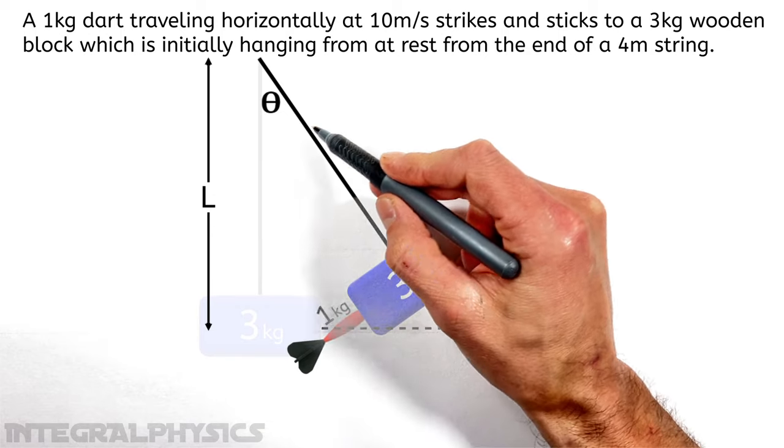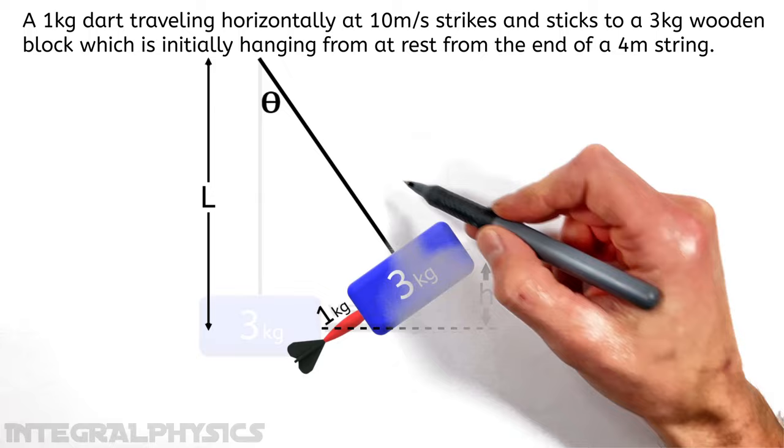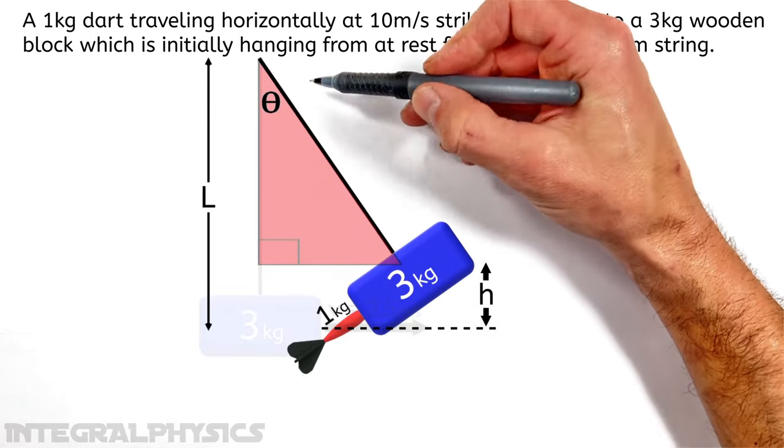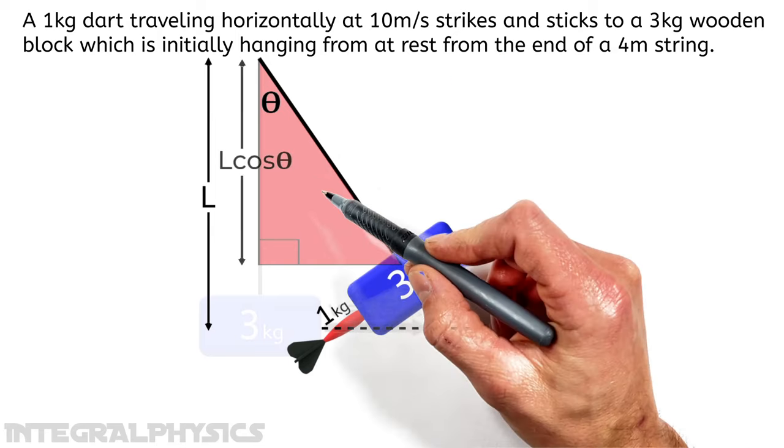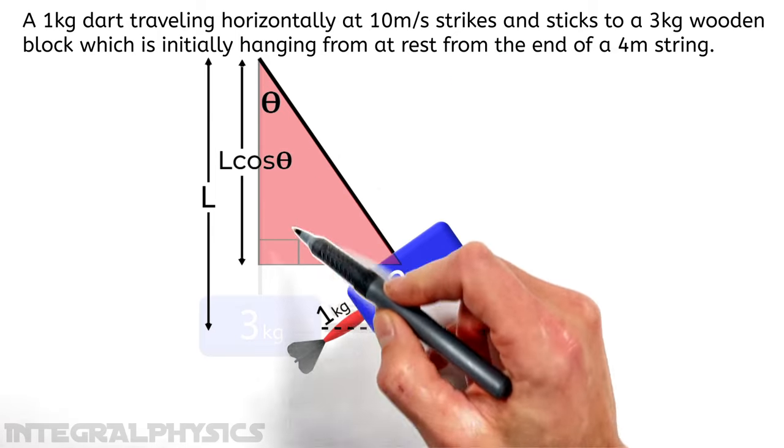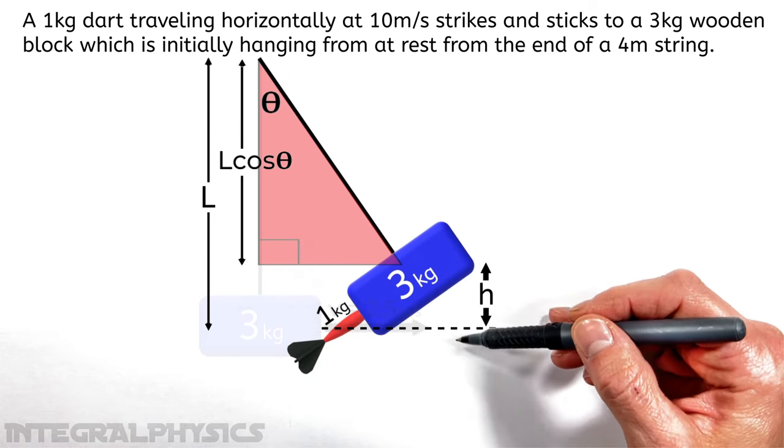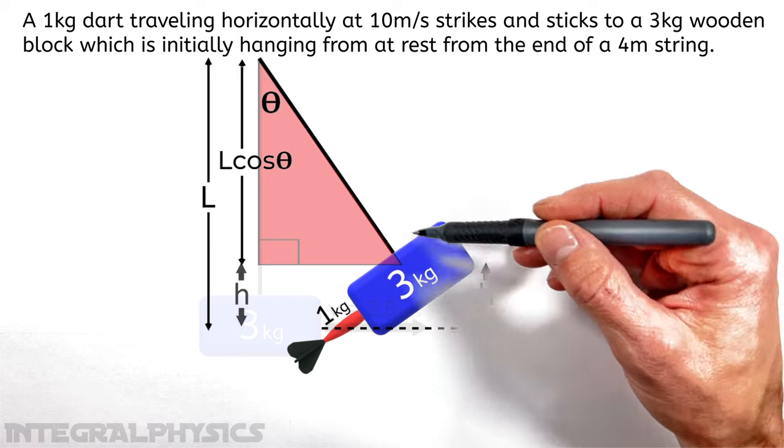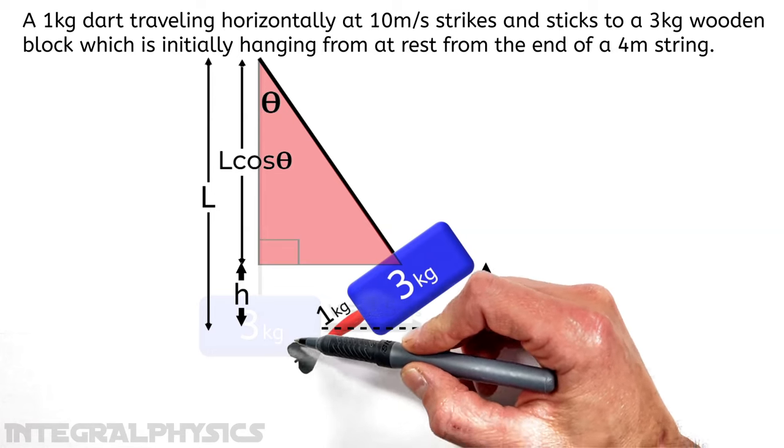But if you look at this with respect to this angle right here, and you view what's going on here as being a large right triangle, this dimension right here is actually L cosine theta, because it's the adjacent side of this right triangle. So, realize h, the distance from here to here, plus this dimension right here, L cosine theta, is equal to L, the total length of this string.